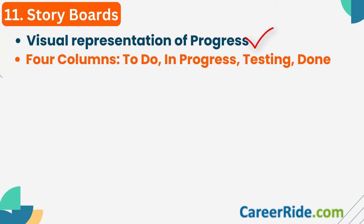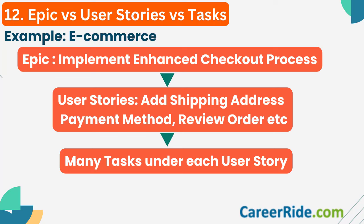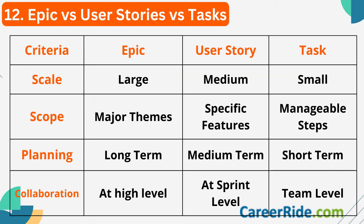Question number 12: differentiate between Epic, User Stories, and Tasks. Looking at Epic, User Stories and Tasks, you can see a hierarchy where Epic lies at the top, followed by User Stories and Tasks. In an e-commerce example, an Epic could be 'implement enhanced checkout process.' It can have various user stories under it, such as 'add shipping address,' 'select payment method,' 'review the order,' etc. Under each user story there can be many tasks to implement it. The progress of an Epic can be tracked across various sprints.